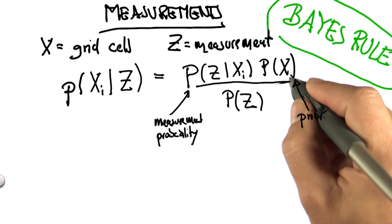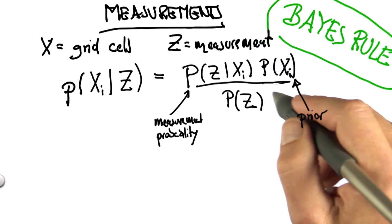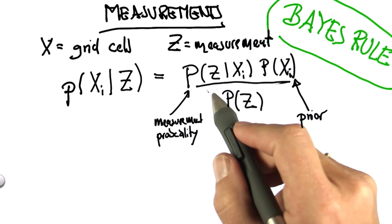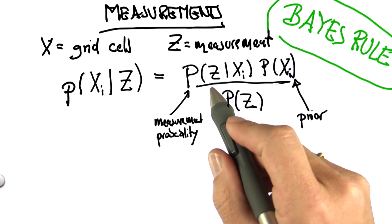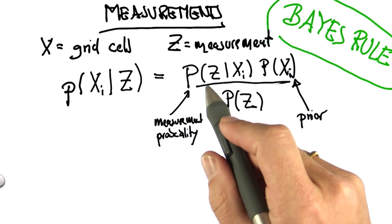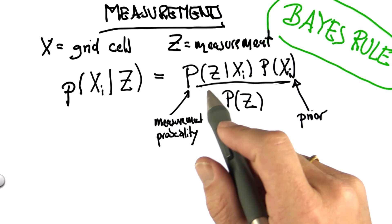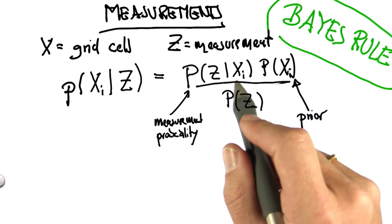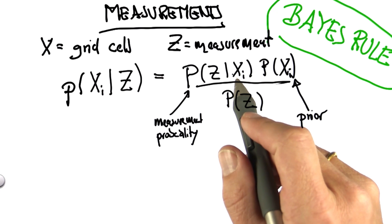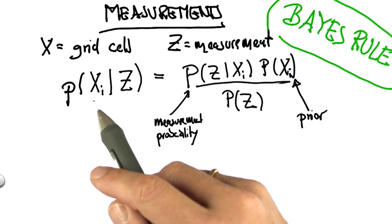Then just the product of the prior of the grid cell times the measurement probability, which was large if the measurement corresponded to the correct color and small if it corresponded to a false color, that product gave us the non-normalized posterior distribution for the grid cell. You remember this because that's what you programmed.